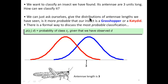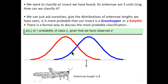Given the distribution of antenna length, the probability that our insect is a grasshopper or a centipede — we don't know, but its antenna is three units long. What we do is calculate: this insect's antenna length is three, and we need to find out whether it is a grasshopper or a centipede. We calculate the probability of class — either grasshopper or centipede — given that we have observed the distribution, using a probability understanding from the distribution.